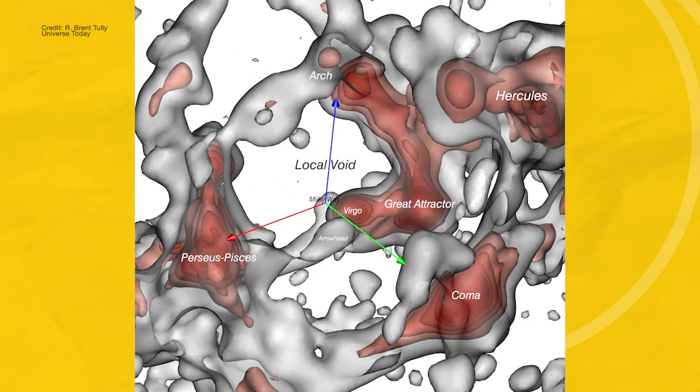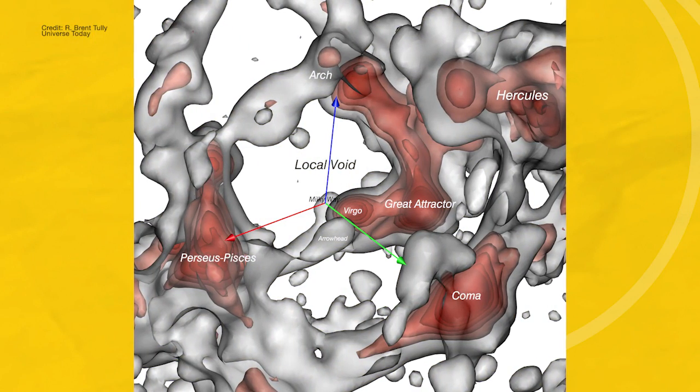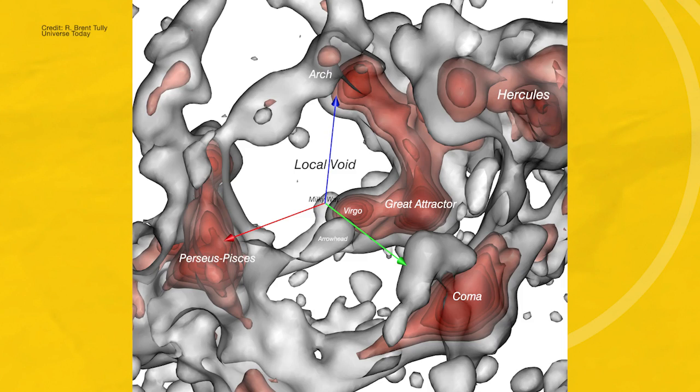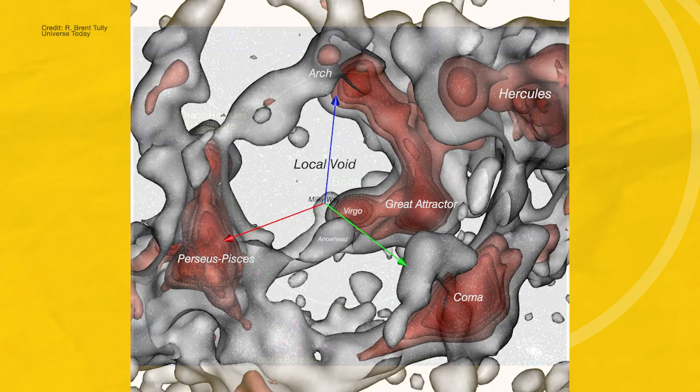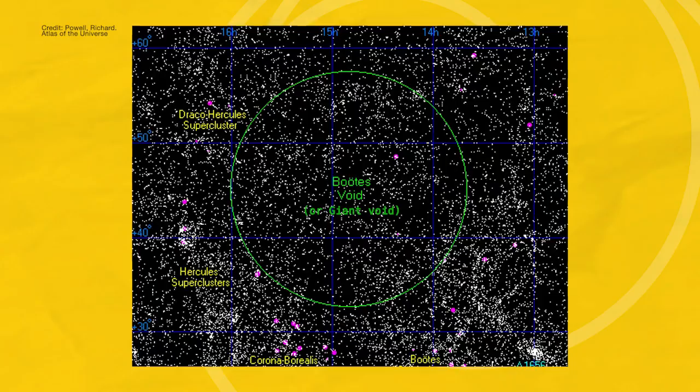The nearest void to our Milky Way galaxy is the appropriately named Local Void, bordering our section of the universe and continuing on for almost 200 million light-years. The aptly named Giant Void is eight times wider.